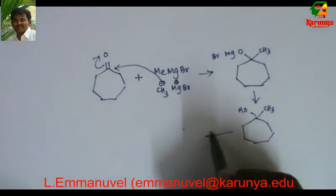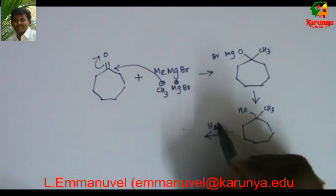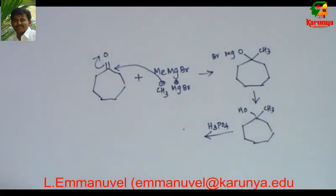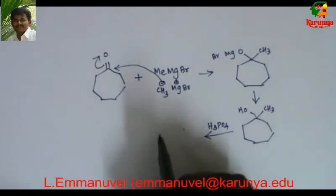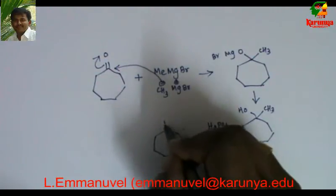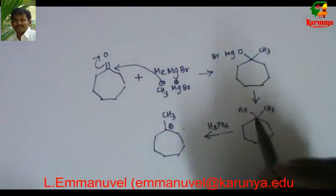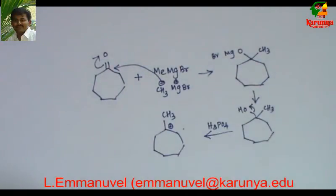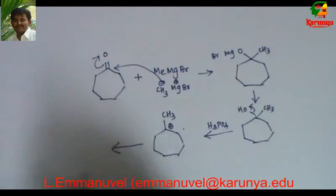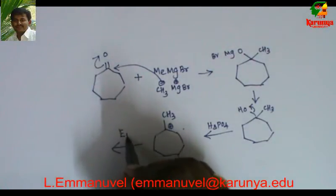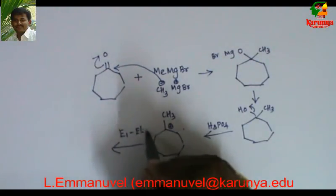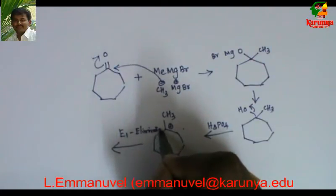When the tertiary alcohol is treated with H+ — in our case phosphoric acid, H₃PO₄ — elimination of a water molecule gives a tertiary carbocation. Since it is a tertiary carbocation, it can undergo E1 elimination to give an olefin.